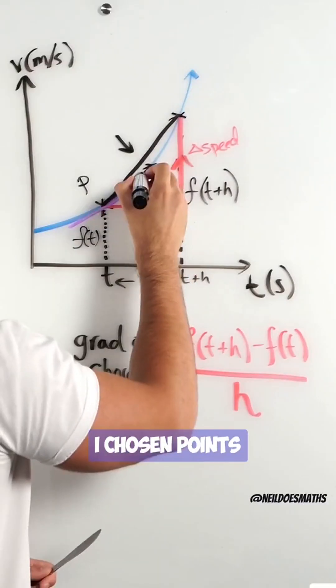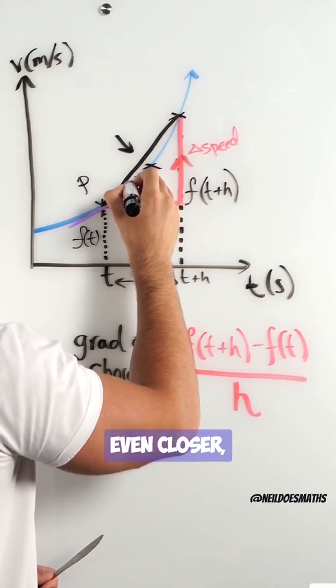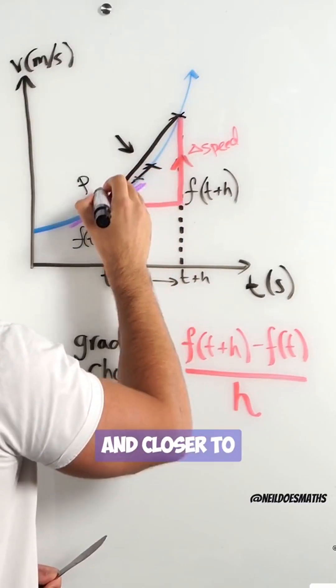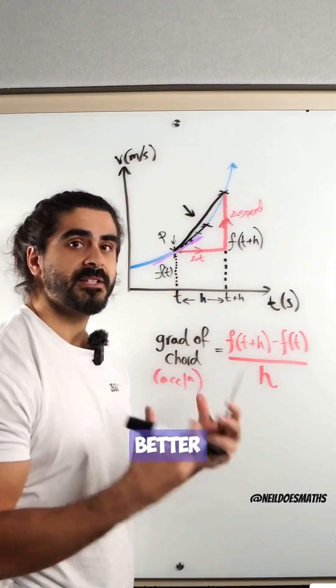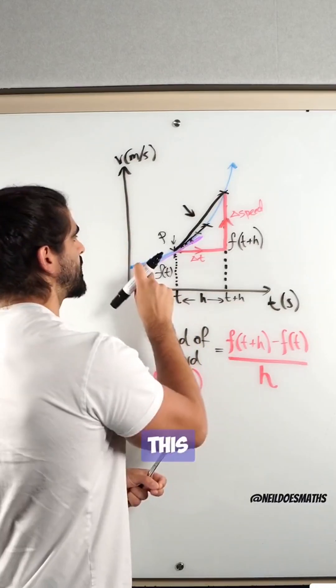Nice! In fact, had I chosen points even closer, closer and closer to this point p, all of those chords will have better and better approximations to this tangent.